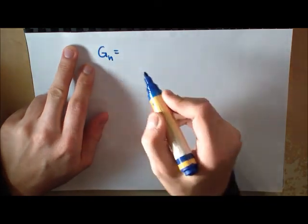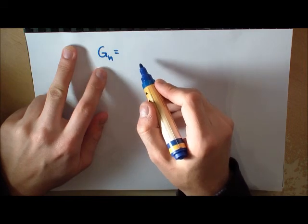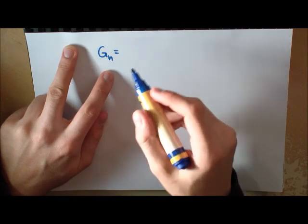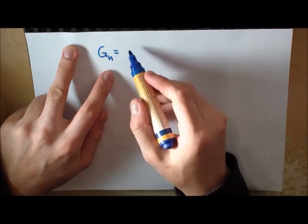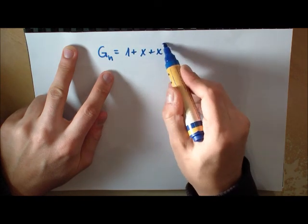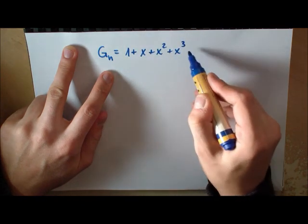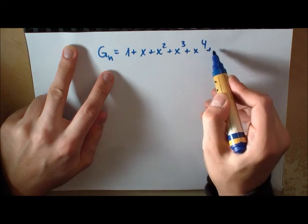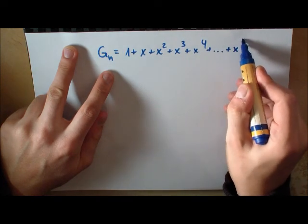I will just call it GN, like G unit. What does this look like? It's looking like X plus X squared plus X cubed plus X to the 4.